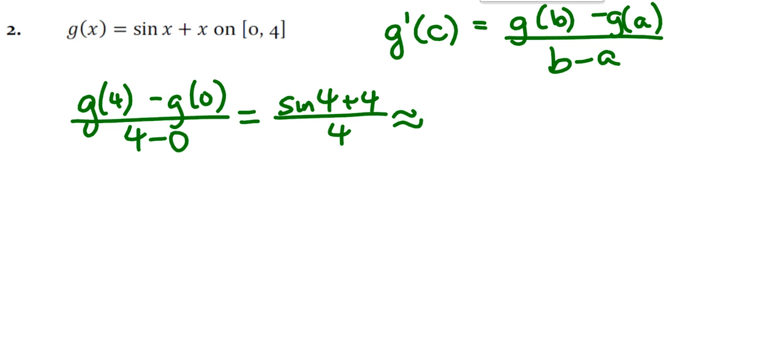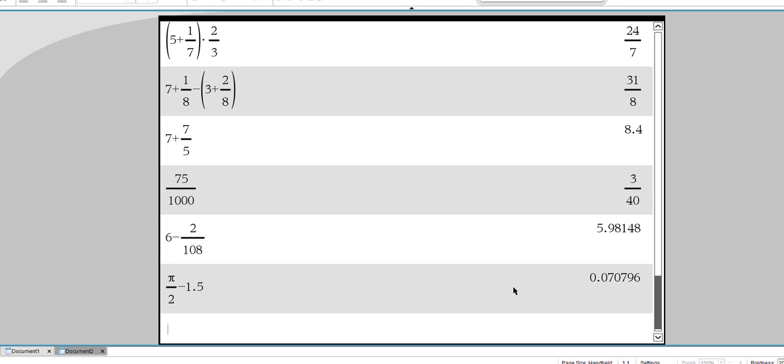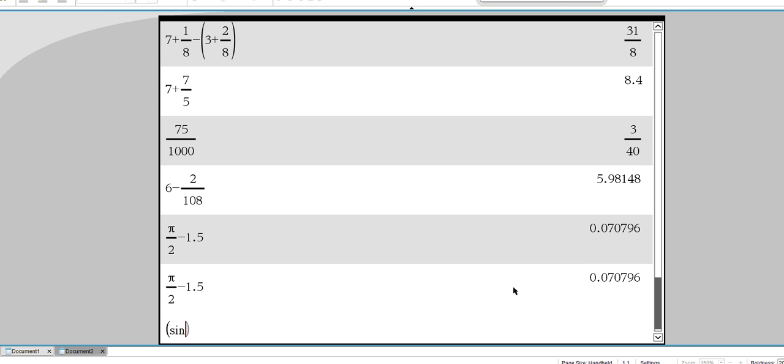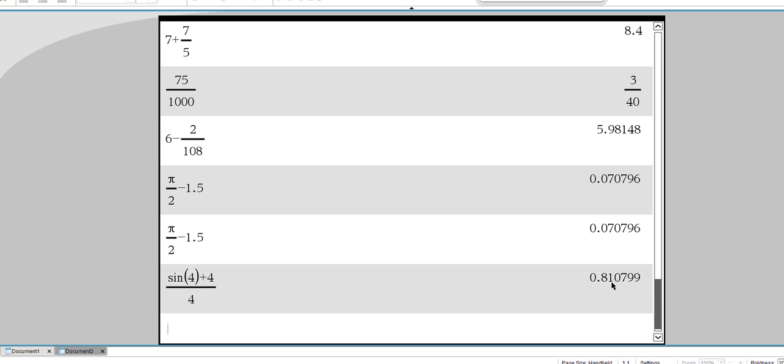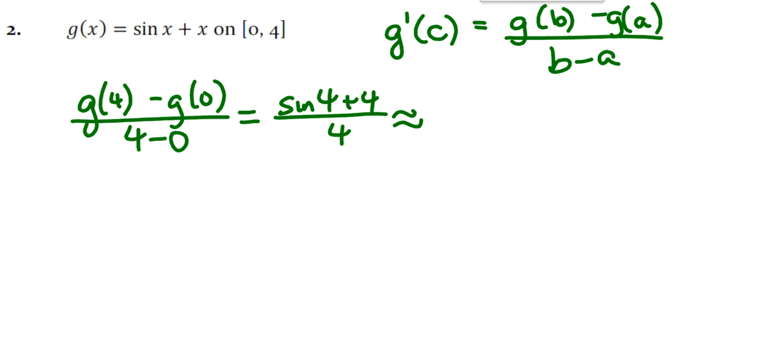What is that? Well, I got a calculator that does this for me. So you got sine of 4 plus 4 over 4. That's approximately 0.810799.